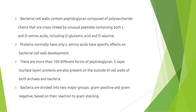Bacterial cell walls mainly have a peptidoglycan layer that is composed of polysaccharide chains cross-linked by unusual peptides containing both D and L amino acids, including D-glutamic acid and D-alanine. Proteins normally have only L amino acids, which have a specific effect on bacterial cell wall development. There are more than one hundred different forms of peptidoglycan. S-layer proteins are also present on the outside of cell walls of both archaea and bacteria.